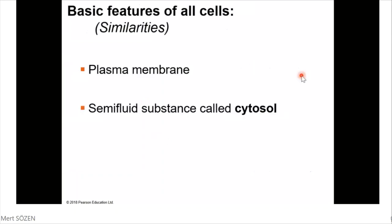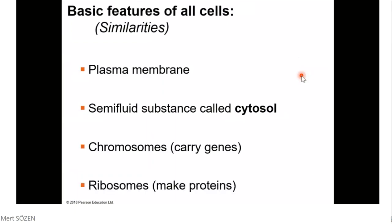Second, a semifluid substance called cytosol, and chromosomes — which means DNA that carry genes — and ribosomes. So every cell, whether prokaryotic or eukaryotic, must have these structures: plasma membrane, cytosol, chromosomes made up of DNA, and ribosomes. These structures are present in any kind of cell.